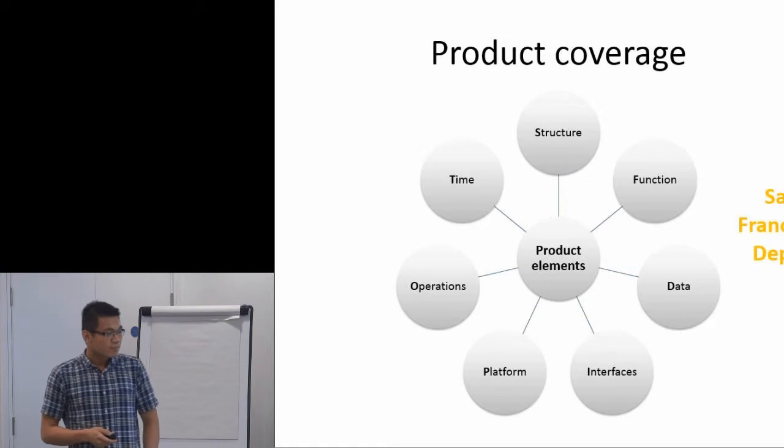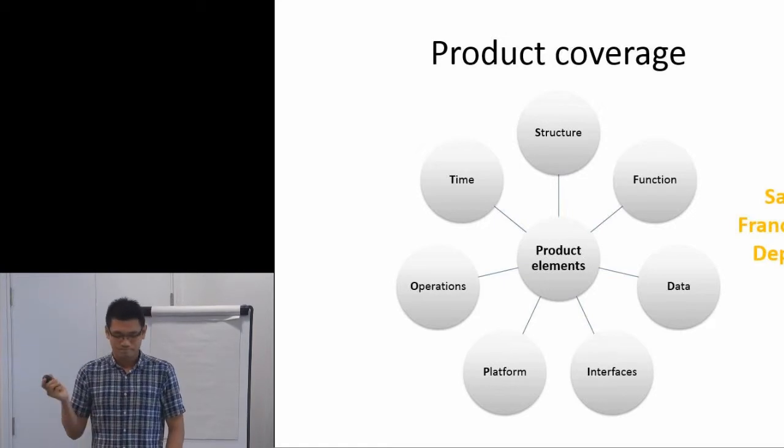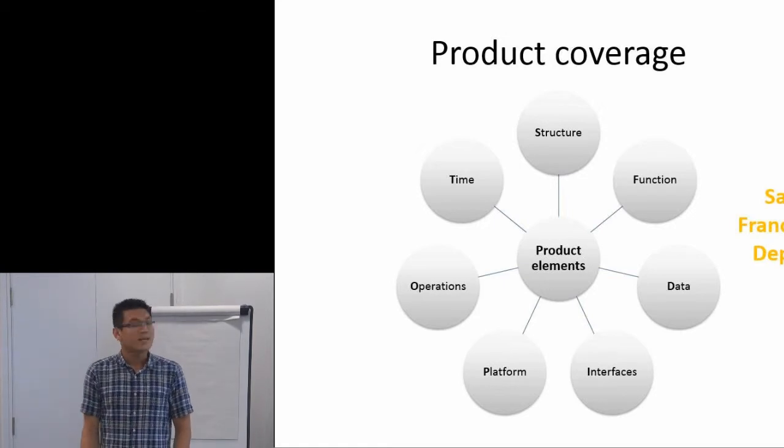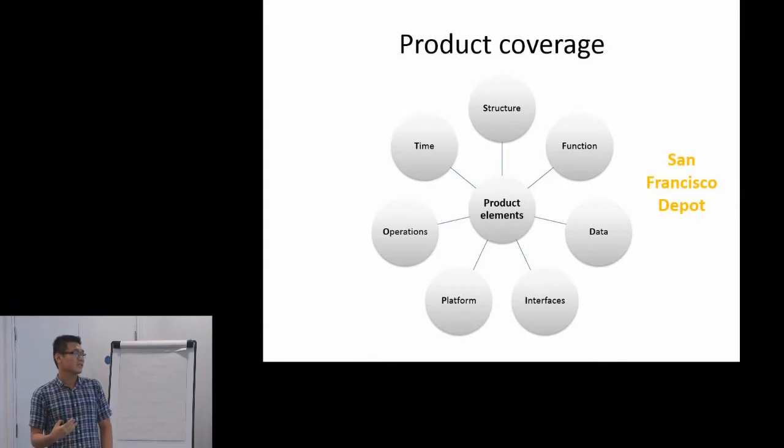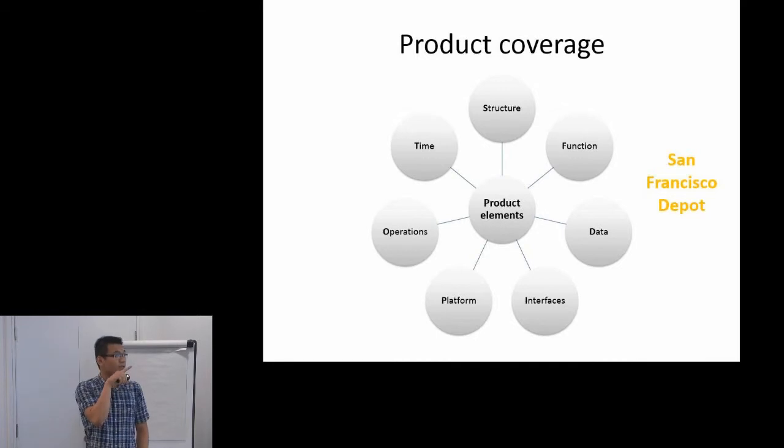Testers like mnemonics basically. They have come up with this San Francisco Depot for things you look for when you look at product elements. These are structure, function, data, interfaces, platform, operations, and time.